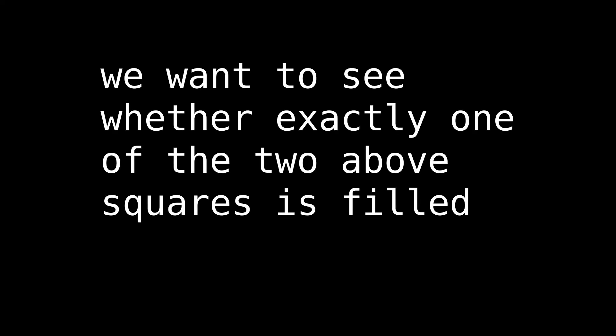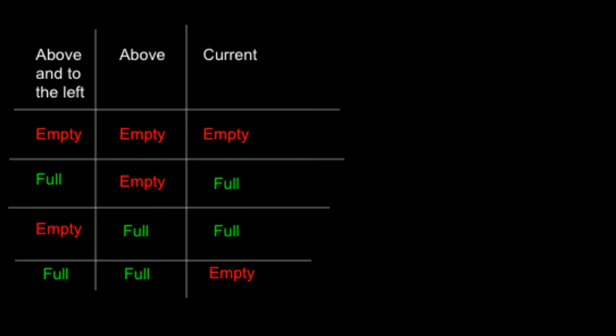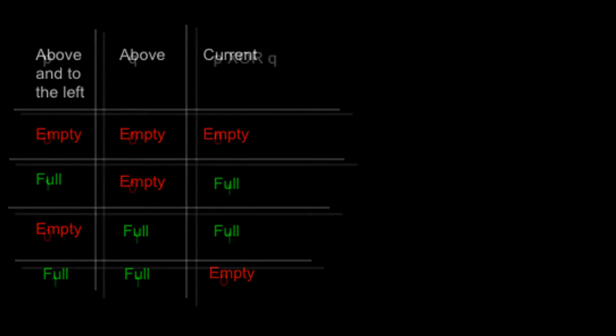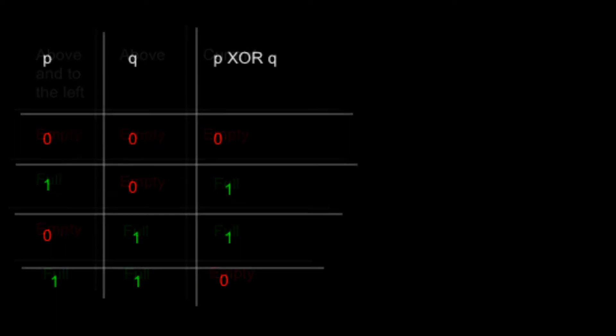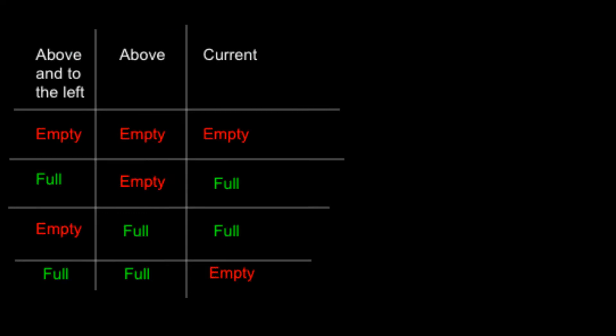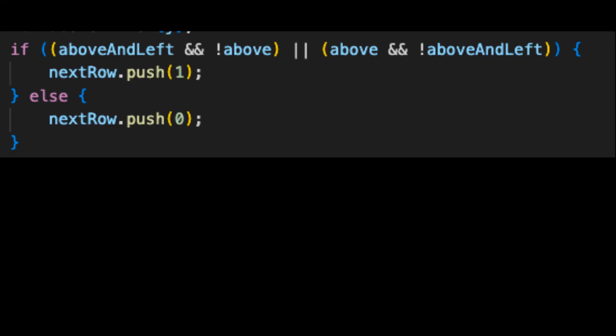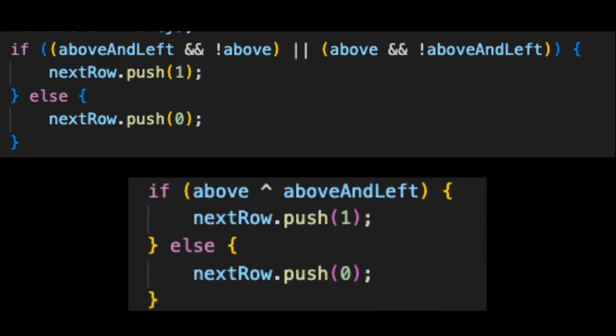Those of you who've studied logic might see another opportunity for improvement here. As I've stated many times before, we want to see whether exactly one of the two above squares is filled. Here's a truth table for that operation — look familiar? This is just an exclusive or (XOR) operation in disguise. Therefore, since we're working with zero and one, we can just replace all these logical operators with a bitwise XOR, which also works for undefined.